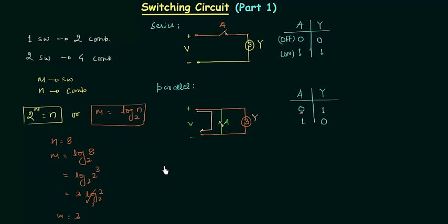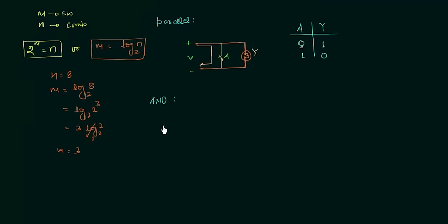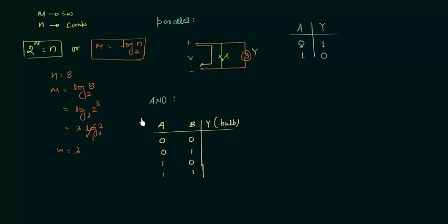Now we are going to discuss the AND operation. We will take two switches A and B, and Y is the output. We have four possible combinations: 0,0 / 0,1 / 1,0 / 1,1. In the AND operation the output Y will be high only when both inputs are high. So for 0,0 the output is low; for 0,1 the output is low; for 1,0 the output is low; and for 1,1 — when both A and B are high — the output is high.